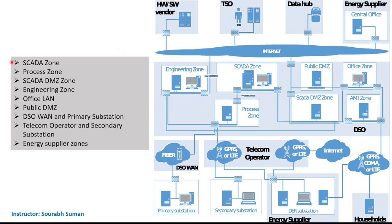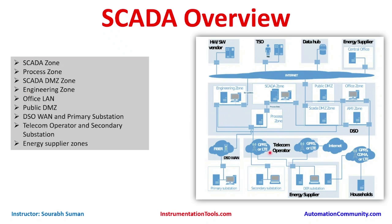DSO stands for Distribution System Operator. The DSO zone can be a dedicated channel managed by the distribution system operator or connected via fiber communication. There is also a telecom operator zone for secondary substations connected by telecom communication. Additionally, the AMI zone handles collector readings of energy data from households, industrial customers, and allows office staff to query meter status and issue switching commands to specific customers — particularly when smart meters are used.